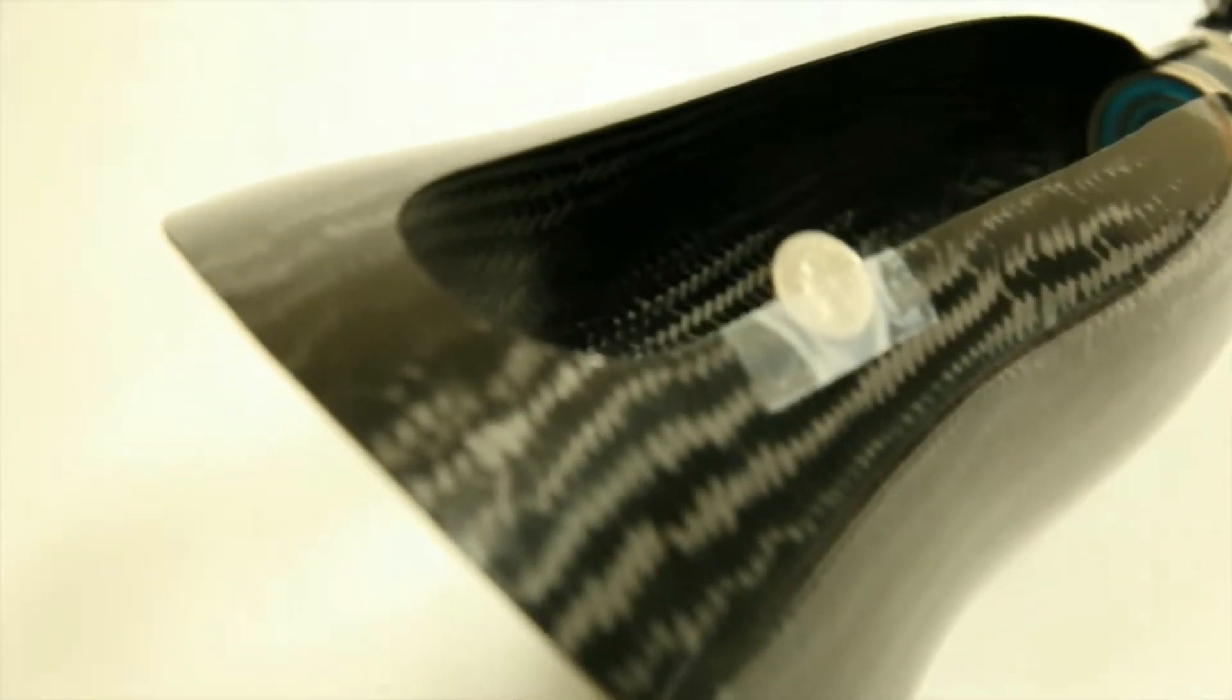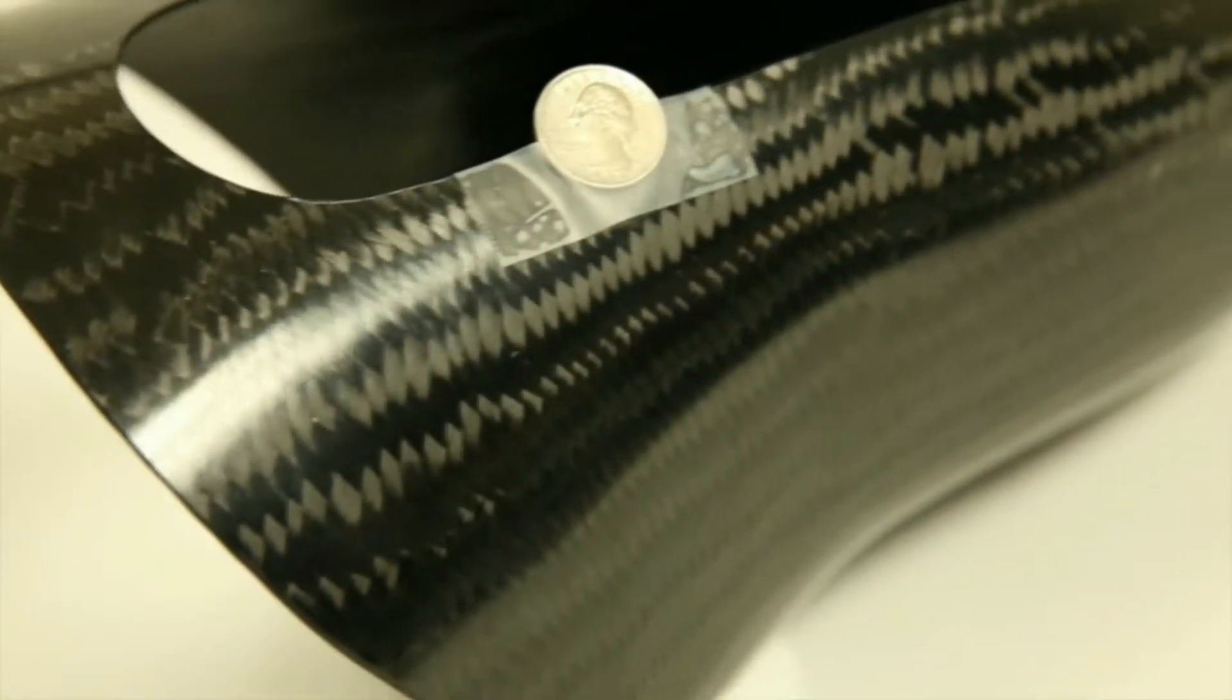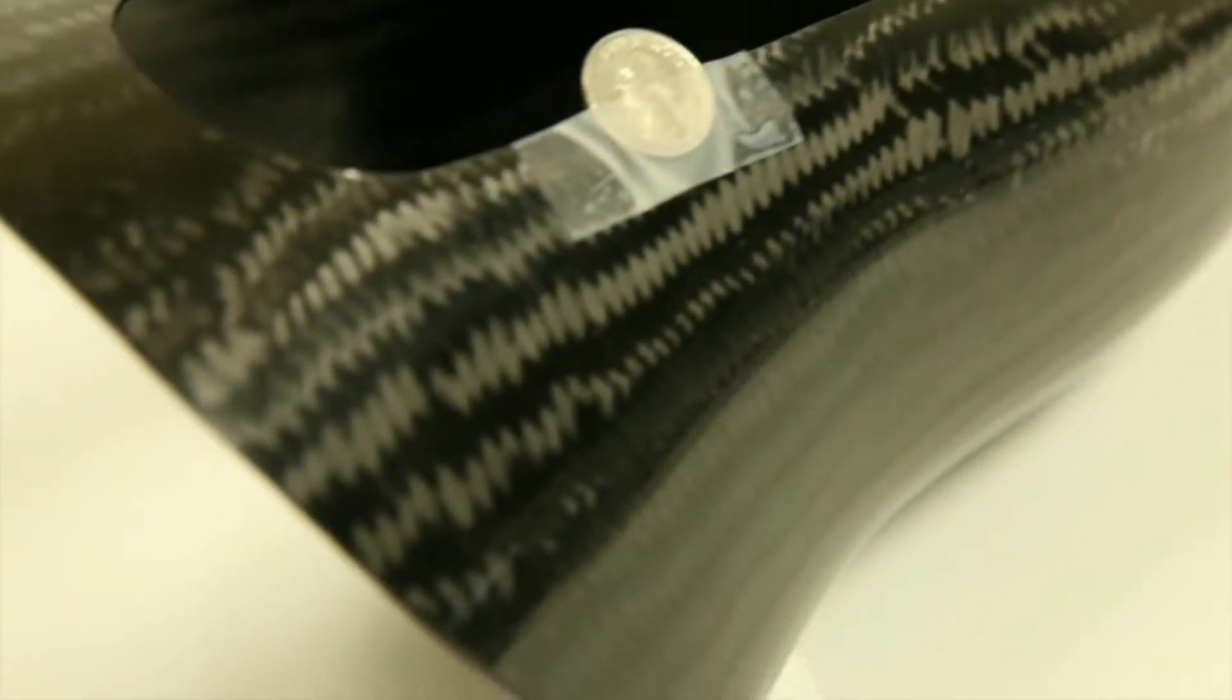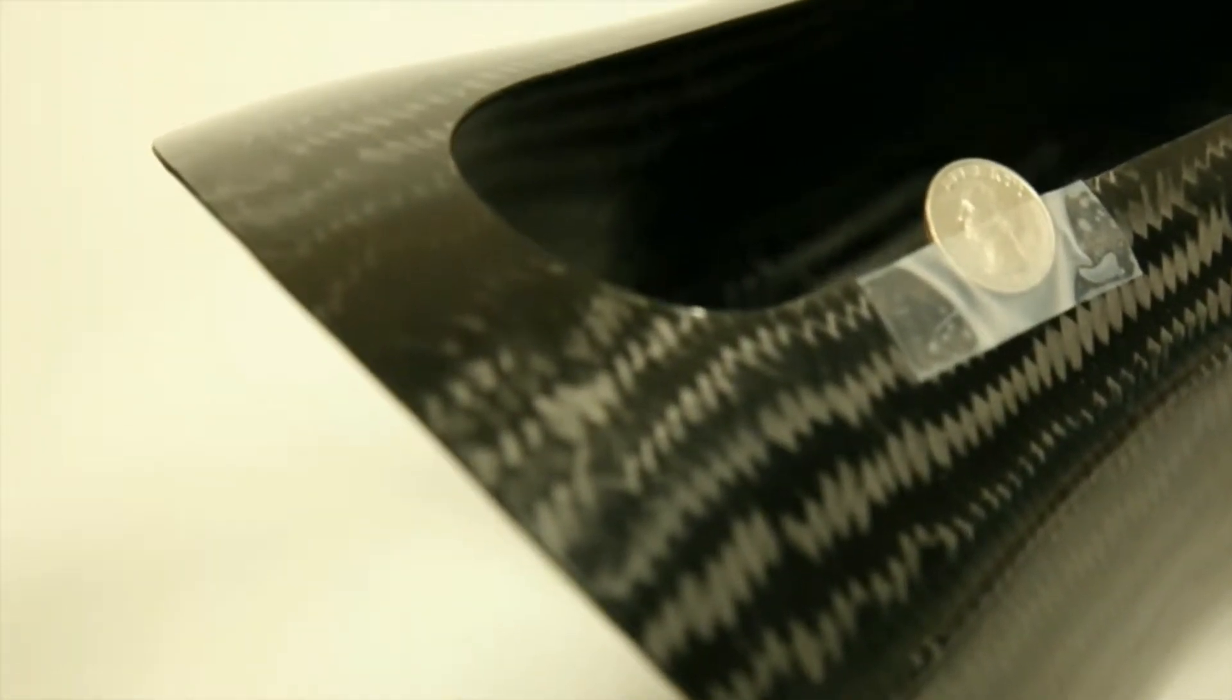Fiber orientation is everything when it comes to doing a correct lamination. And this braid is designed for correct fiber orientation to give a prosthesis the ultimate strength per weight ratio.